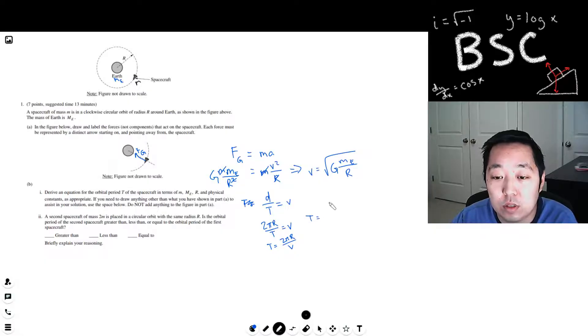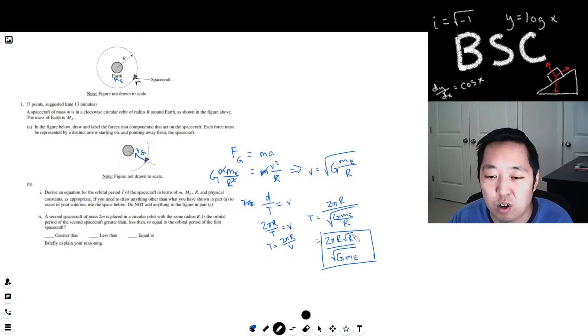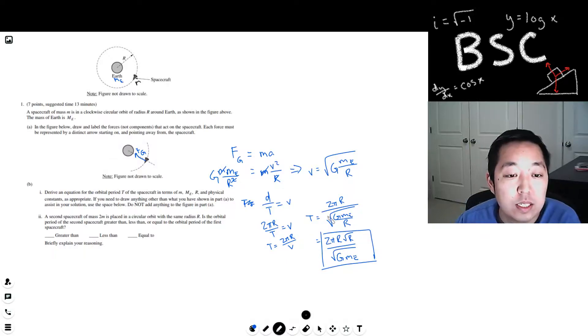So T would equal 2πR over the square root of GME over R. I want to combine these R's. This is a square root of R down here. If it goes to the numerator, invert, so it's 2πR square root of R over the square root of GME. That would be my answer. There's different ways to rearrange it. You could say this is R to the three halves or whatever, but okay, that's it.